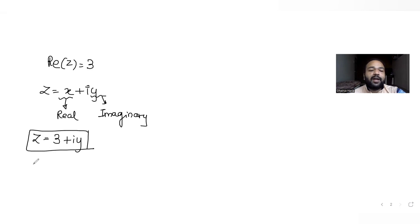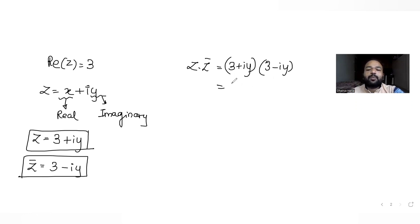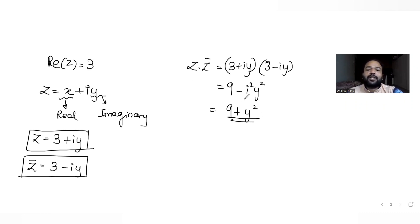If z is 3 plus iy, then z-conjugate becomes 3 minus iy. Now, if you take the product z times z-conjugate, it becomes (3 plus iy)(3 minus iy), which is of the form (a² minus b²), giving us 9 minus i²y². Since i² equals minus 1, this becomes 9 plus y². So this is the value of z times z-conjugate.